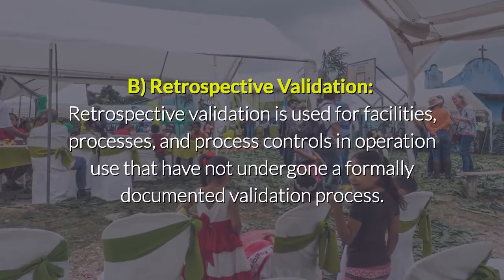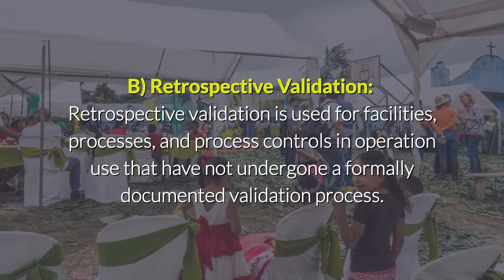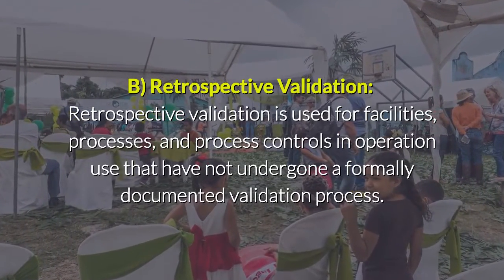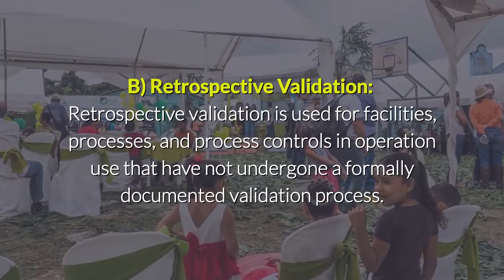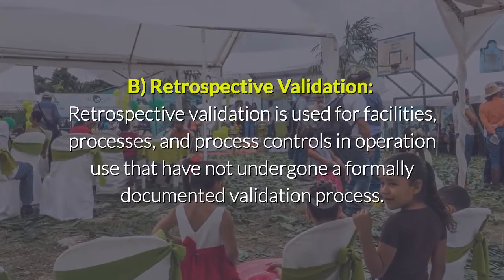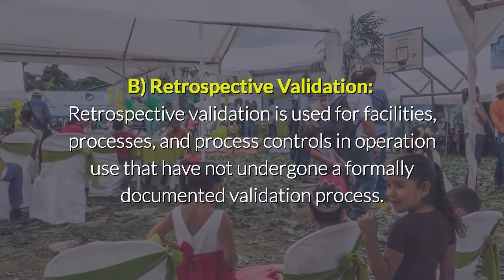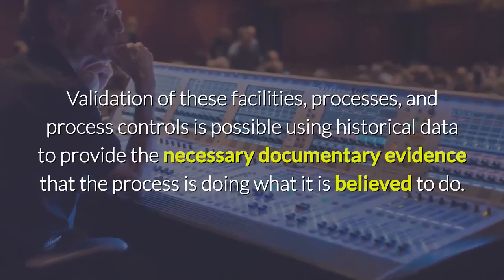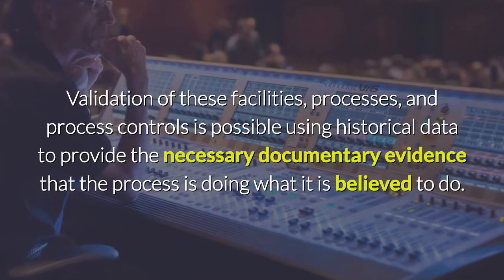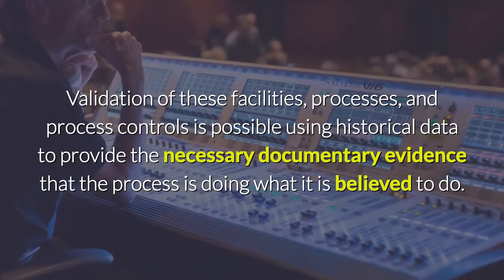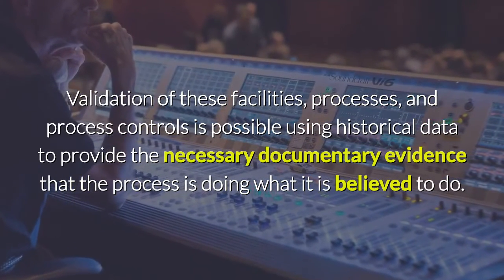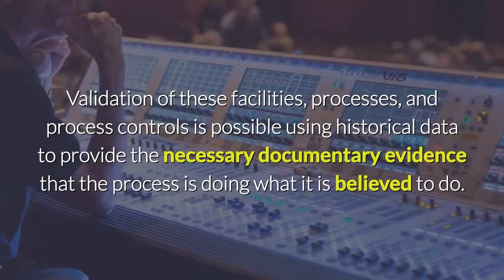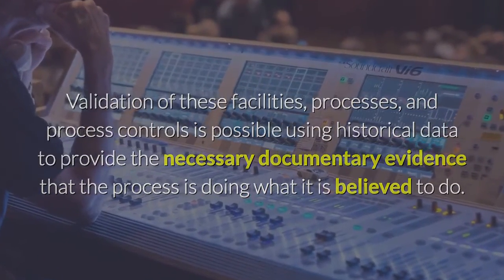Retrospective validation is used for facilities, processes, and process controls in operation that have not undergone a formally documented validation process. Validation of these facilities, processes, and process controls is possible using historical data to provide the necessary documentary evidence that the process is doing what it is believed to do.